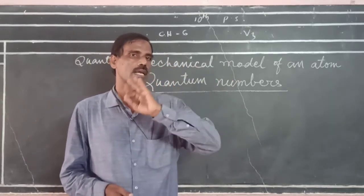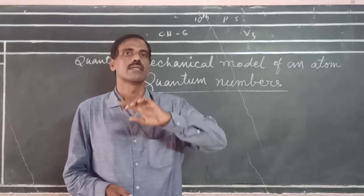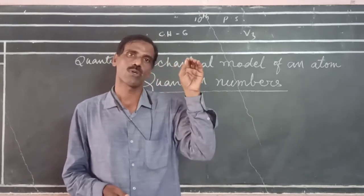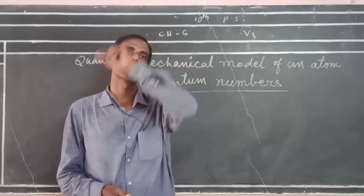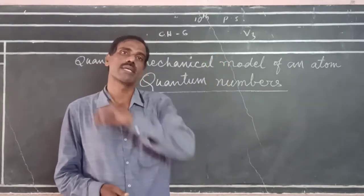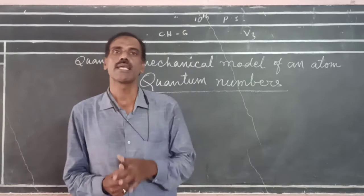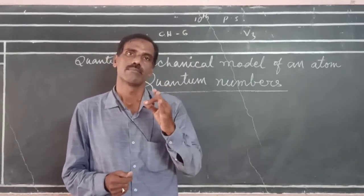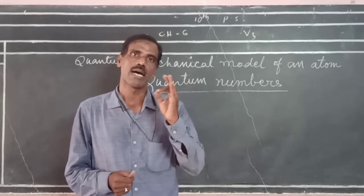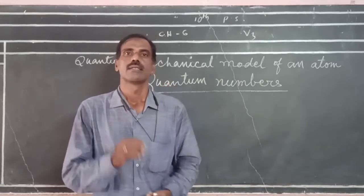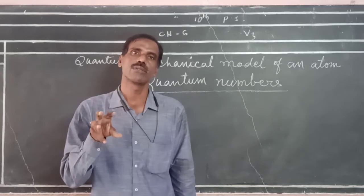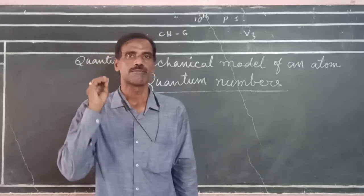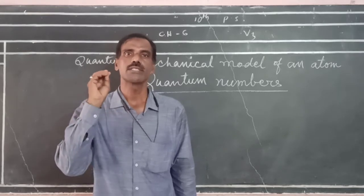An orbit is a circular path in which electrons revolve around the nucleus, and the orbit was proposed by Bohr. An orbital is proposed by Max Planck, and it is nothing but the space around the nucleus where the probability of finding electrons is more.